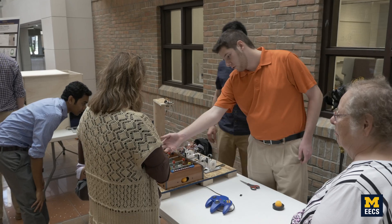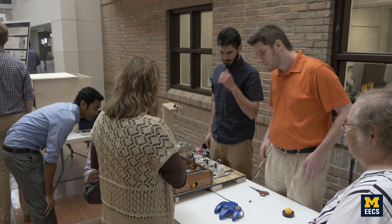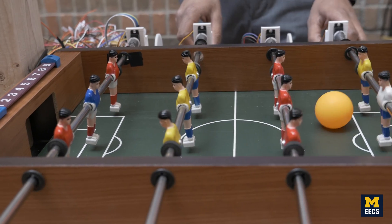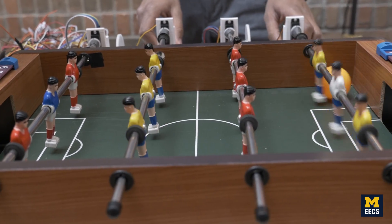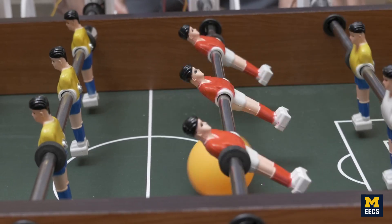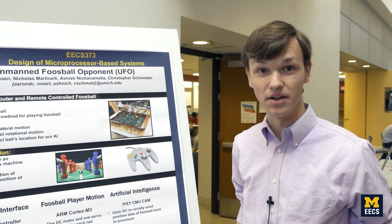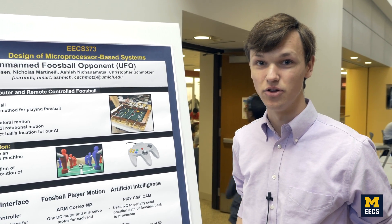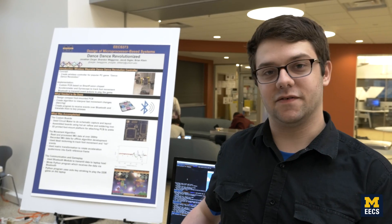This is our unmanned foosball opponent. The main idea is that we have an AI that controls the red team on our foosball table, so you can play against an artificial intelligence and test your skills against a machine instead of a human player.